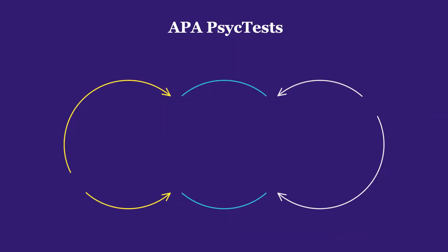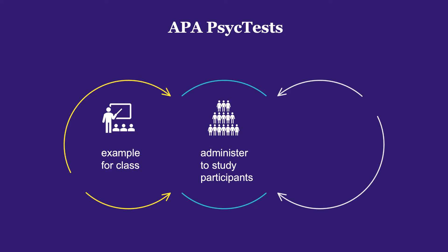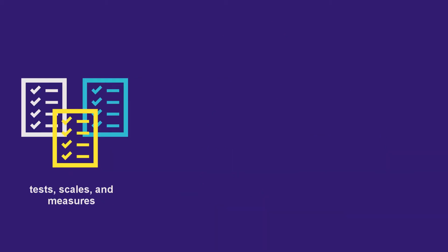Whether you plan to use a test as an example for class, to administer to study participants, or to review as a starting point to develop your own test, APA PsychTest is your ideal starting point. This database provides information on tests, scales, and measures that were originally published in journal articles.